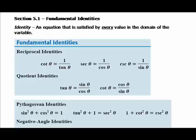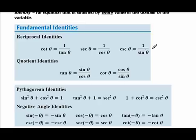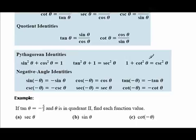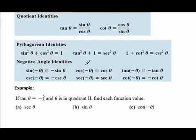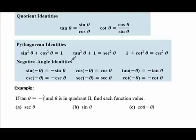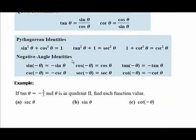We're going to take these fundamental identities that you already know. We have the reciprocal identities, the quotient identities — tangent is the same as sine divided by cosine, cotangent is cosine divided by sine — and the Pythagorean identities: sine squared plus cosine squared equals one, and its two counterparts. We also have negative angle identities, related to whether a function is odd or even. For example, sine of negative theta equals negative sine theta. All of these should be listed in the back of your book under Section 5.1.